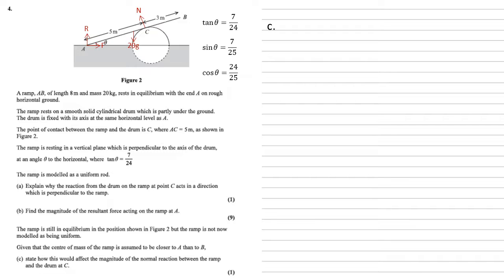One way to think about this is by using one of the equations we've just used, which was a moment around A. We had 5N equals 4 times 20G cos theta.